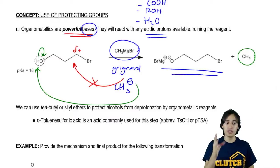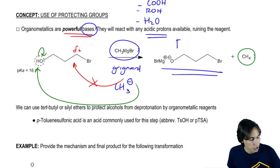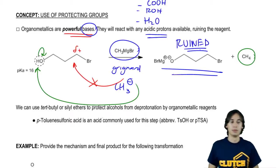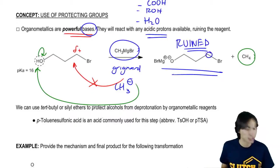By the way, the MgBr positive is just a spectator ion that associates with the O. This is considered ruined. This is not good. Because now the Grignard can't react with the electrophile that I intended it to, which was this carbon right here.